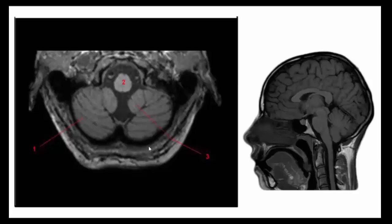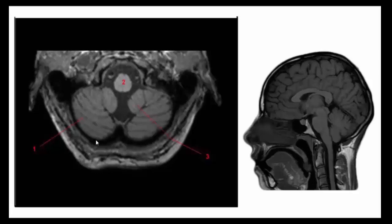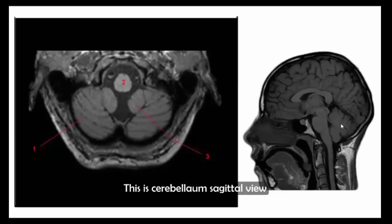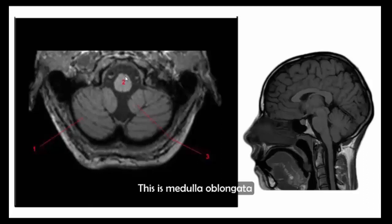Assalamu alaikum warahmatullah. Today I will discuss MRI of brain cerebellum and their definition. This is an axial image and this is a sagittal image. The cerebellar hemispheres are two divisions of the cerebellum on either side of the vermis. This is the cerebellum on sagittal view.